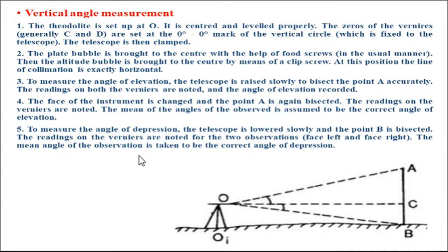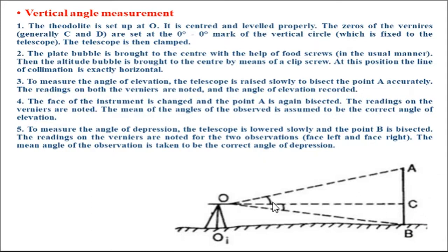To measure the angle of depression, the telescope is lowered slowly and point B is bisected. The readings on the verniers are noted for both face-left and face-right observations. The mean of the two observations is the correct value of the angle of depression. We depress the telescope downward to bisect point B, and the readings on verniers C and D give the depression angle COB. The mean of the two-face readings is the accurate value of angle COB.